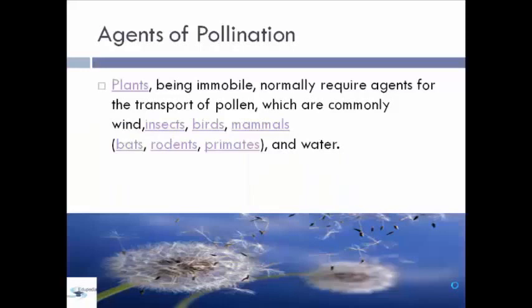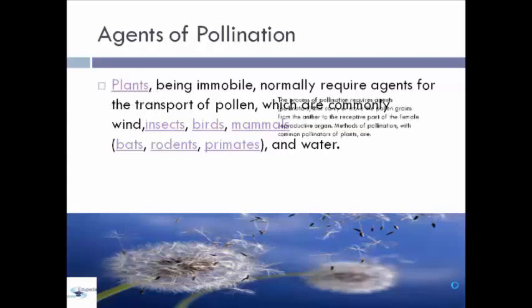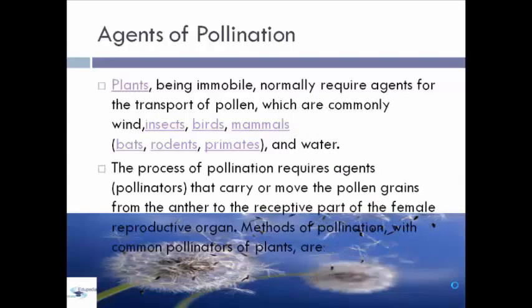When we say agent of pollination, plants being immobile normally require agents for the transport of pollen. These agents commonly include wind, insects, birds, mammals, bats, rodents, primates, and water. The process of pollination requires agents — called pollinators — that carry or move the pollen grains from the anther to the receptive part of the female reproductive organ. These are the methods of pollination with common pollinators of plants.